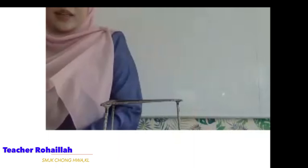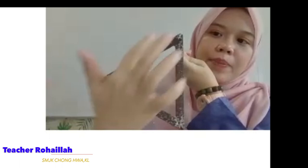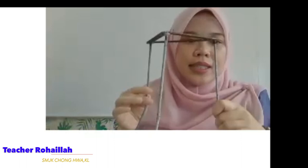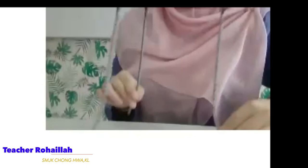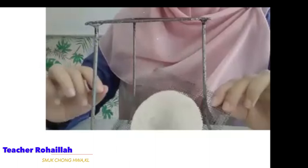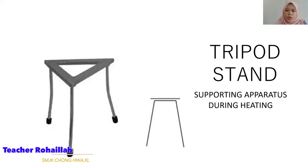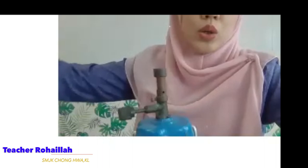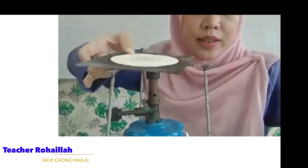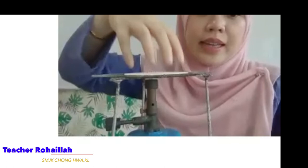This is the tripod stand. The name comes from its three legs — tiga kaki. It usually comes together with the wire gauze placed on top. The tripod stand is used to support apparatus during heating. For example, you place the tripod stand, put the wire gauze on top, then place the beaker on it, and heat using the Bunsen burner below.